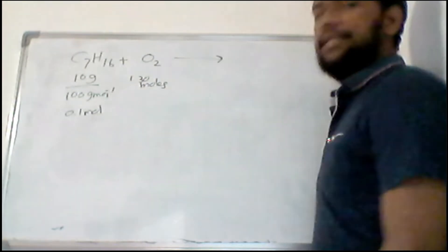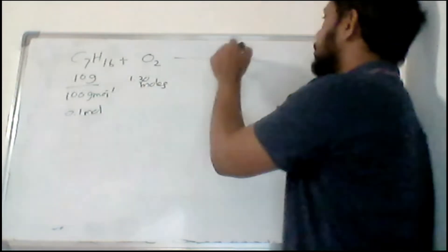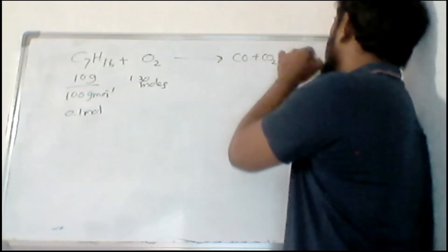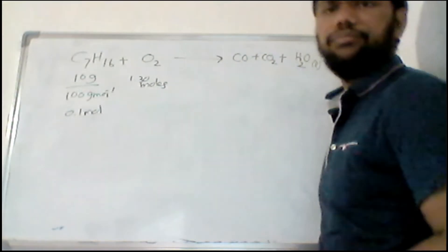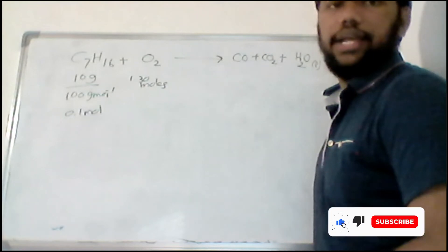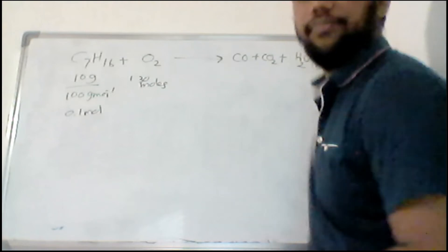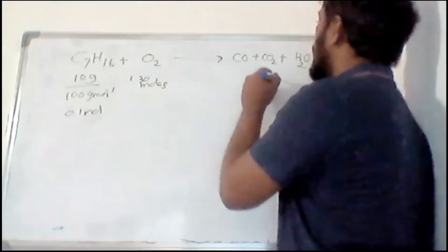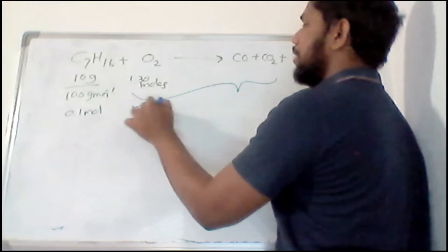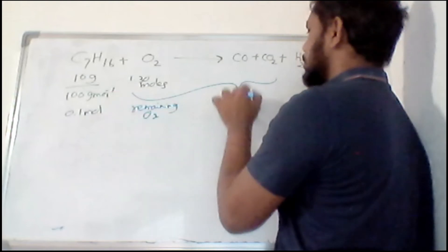Okay, and they're telling when you undergo this combustion, carbon monoxide plus carbon dioxide is formed along with water, which is still in the liquid state. And the number of moles at the end of this reaction is 1.1 moles of carbon dioxide, carbon monoxide, and remaining O2. Including remaining O2, the number of moles is 1.1 moles.